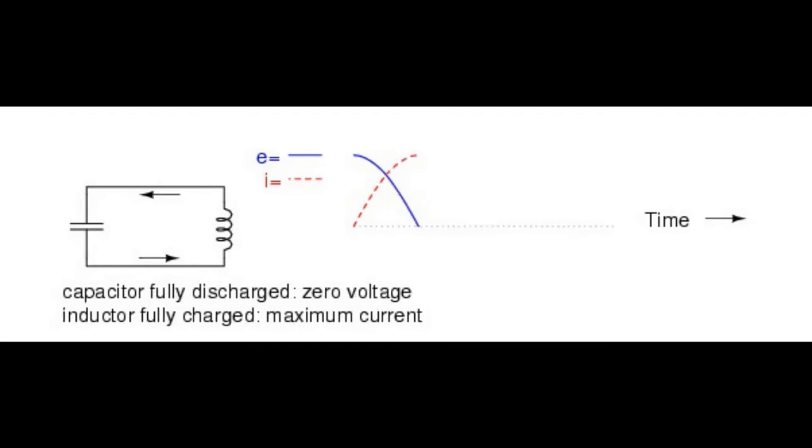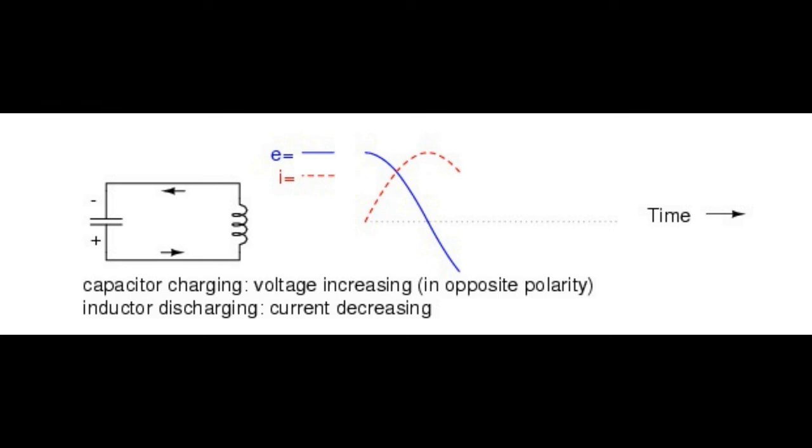The inductor, still charging, will keep electrons flowing in the circuit until the capacitor has completely discharged, leaving a zero voltage across it. The inductor will maintain current flow, even with no voltage applied. In fact, it will generate voltage, a bit like a battery, in order to keep the current in the same direction.